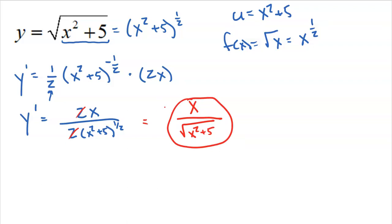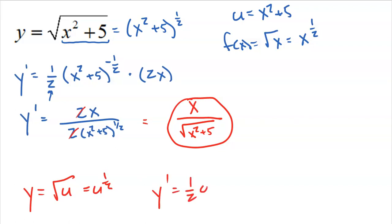If you rewrite the original function as the square root of u, that's u to the one-half. The power rule gives one-half u to the negative one-half, and the chain rule says multiply by the derivative of u, which is 2x. Plugging x squared plus 5 back in for u gives the same result.